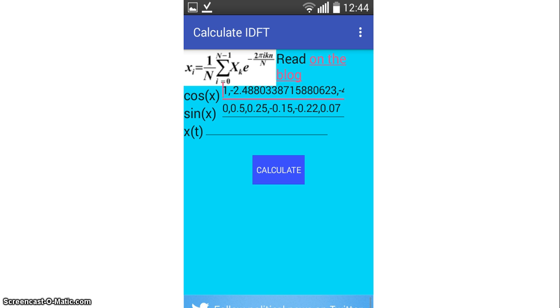For IDFT, just press IDFT button in the first activity and then enter cosine and sine coefficients as two arrays respectively with comma-separated values. Then just press calculate button to obtain your result. Note that array size of cosine and sine coefficients must be the same.